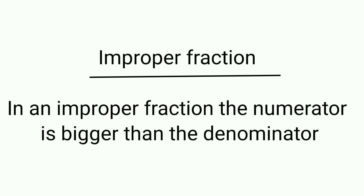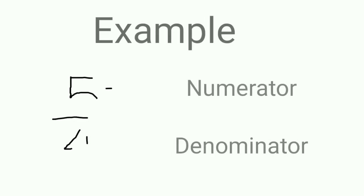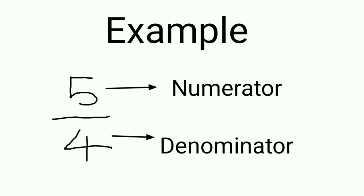In an improper fraction, the numerator is greater than the denominator. For example, 5 upon 4 — here 5 is the numerator and 4 is the denominator. The numerator value is greater than the denominator, so this fraction is an improper fraction.